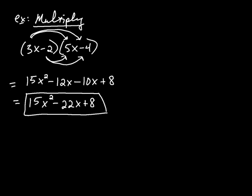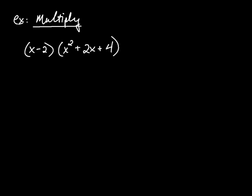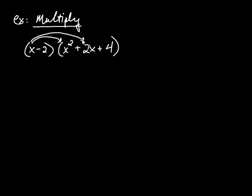Let's try one more to make sure we've got it. Here we're multiplying a binomial by a trinomial. Whenever you multiply two polynomials, you always take the one with fewer terms and multiply each of its terms by the other polynomial. So the arrows will look like this: x times x squared, then x times positive 2x, then x times positive 4. Then negative 2 times x squared, negative 2 times positive 2x, and negative 2 times positive 4.